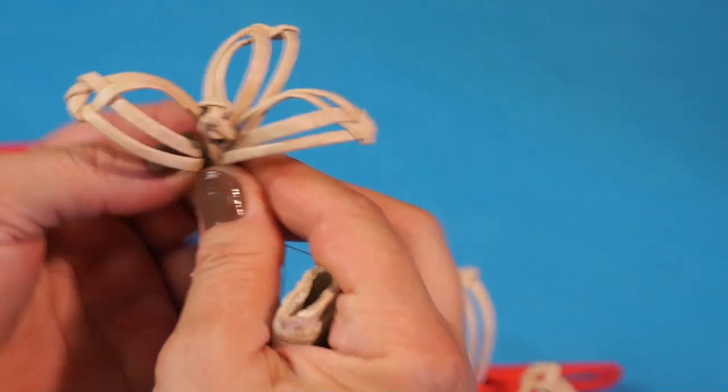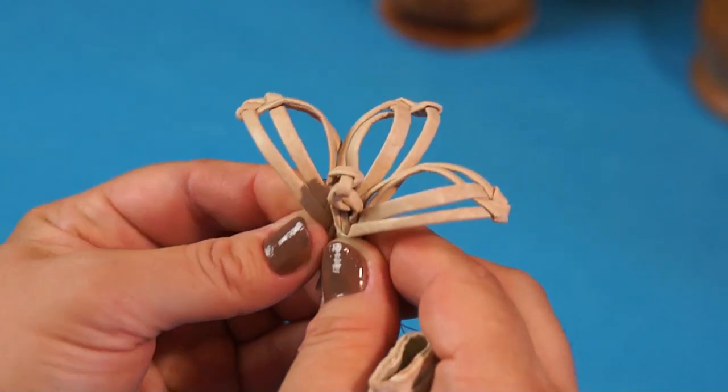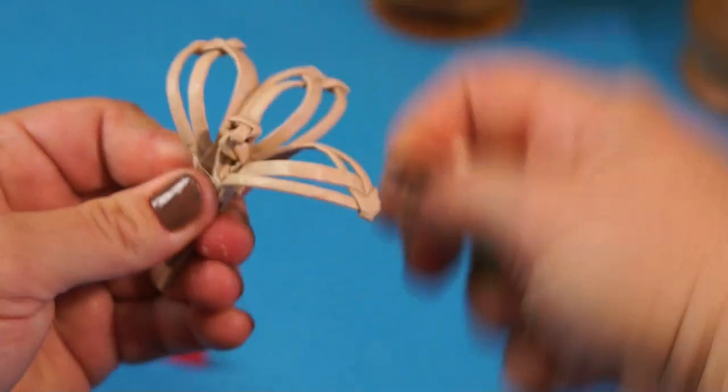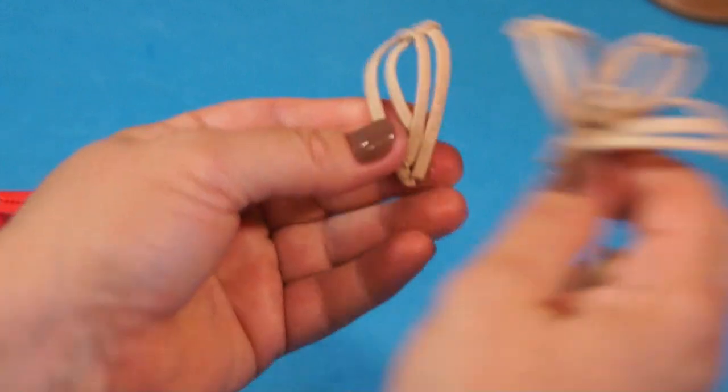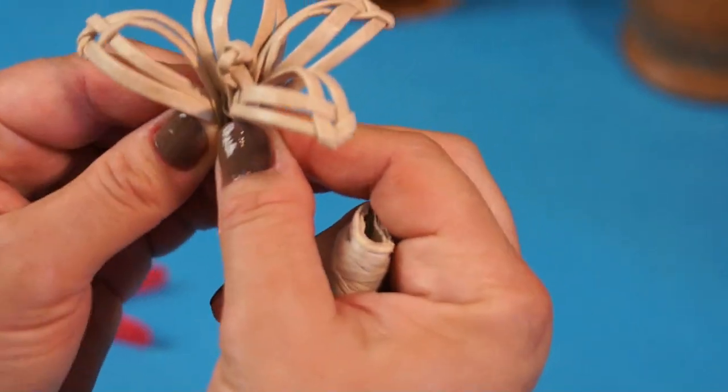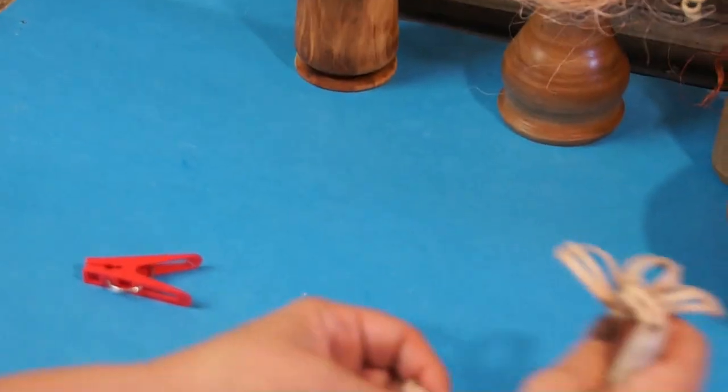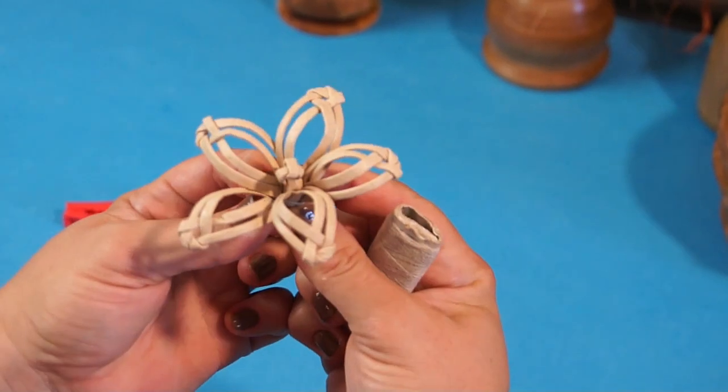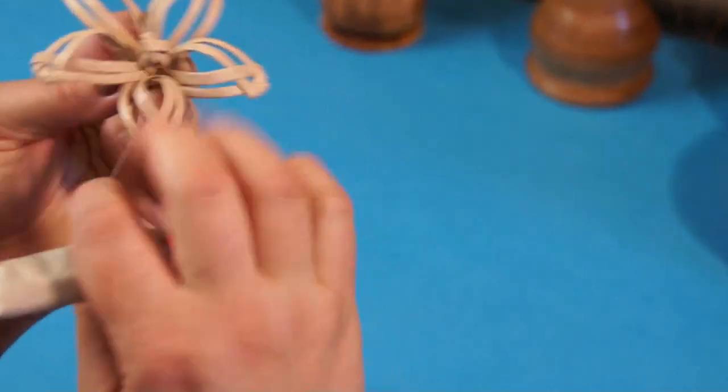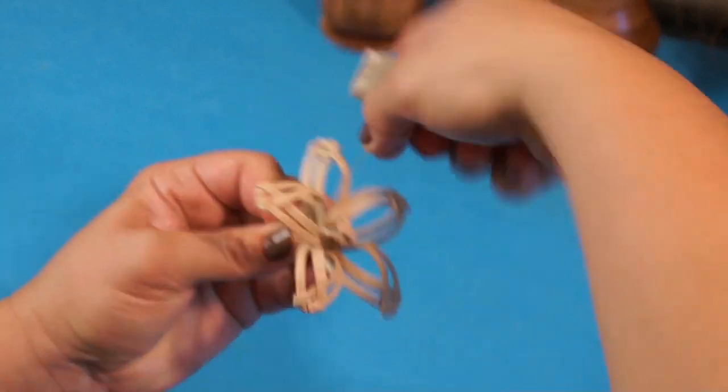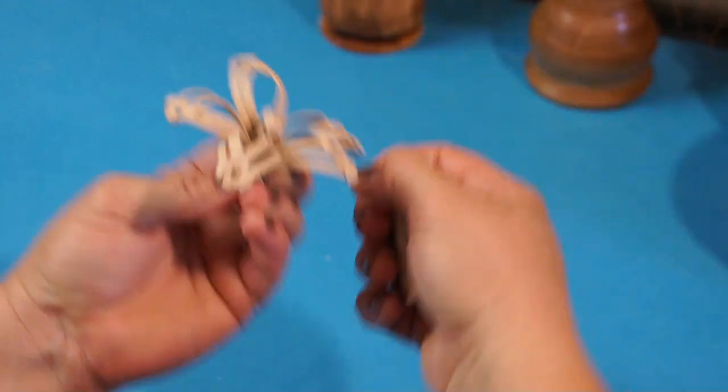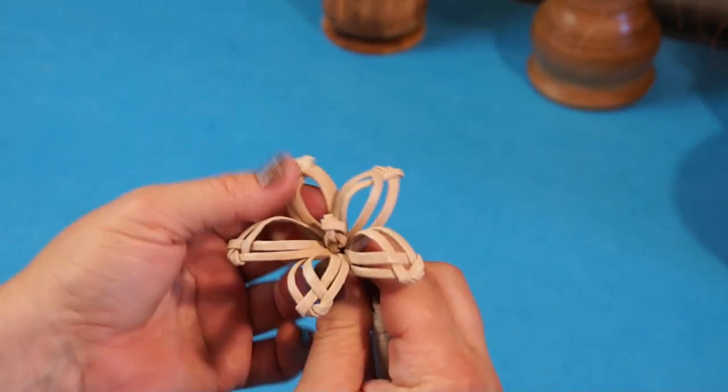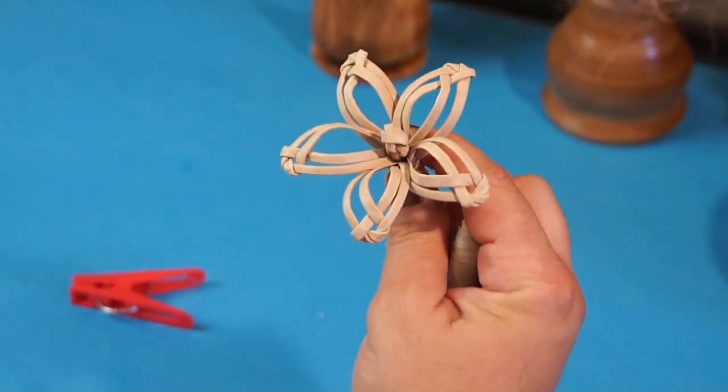The third petal: one, two, three. The fourth one: leave some space for the fifth one. Distribute the petals carefully. And join the last fifth petal. Wrap a thread around the flower thoroughly. So I've got such a core and such a flower.